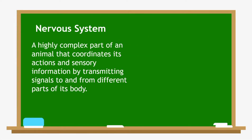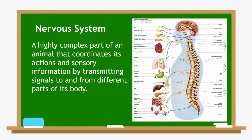Now, let us discuss the nervous system and its functions. The nervous system is a highly complex part of an animal that coordinates its actions and sensory information by transmitting signals to and from different parts of its body.